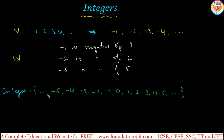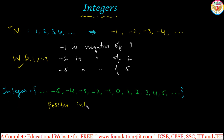We have two sets within integers: positive integers and negative integers. When you look at positive integers, we already know about natural numbers and whole numbers. Whole numbers go from 0, 1, 2, 3, and so on. Positive integers are nothing but 1, 2, 3, and so on — these are nothing but natural numbers. So natural numbers are the positive integers.